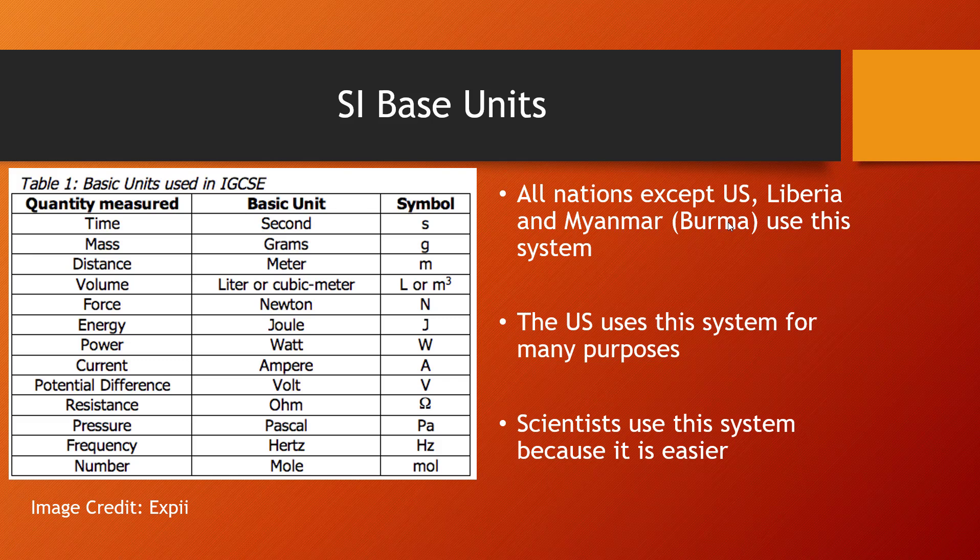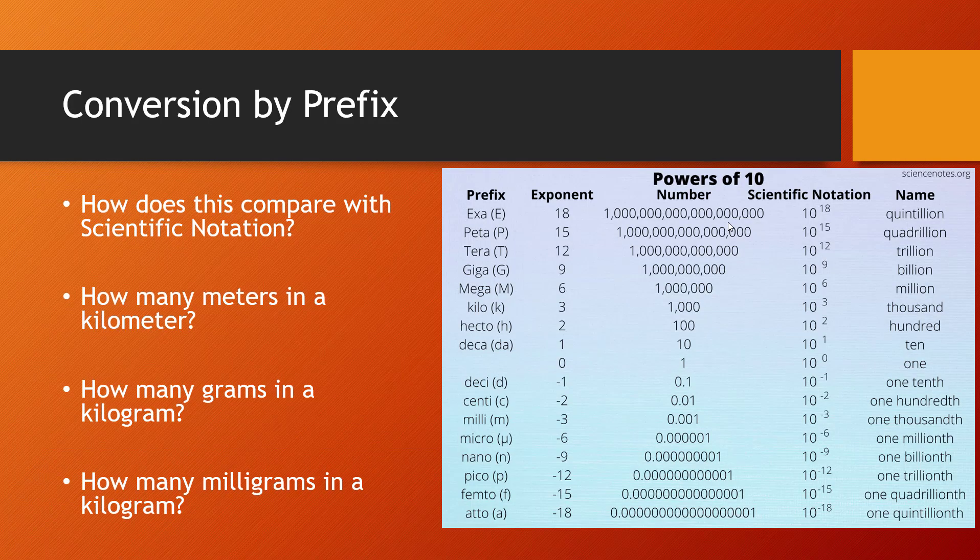We actually use this system pretty often for a lot of different purposes. For example, we measure things in seconds. And if you ever look at the side of your cereal box, you're going to see things measured in grams. You're on a 5k, you're measuring that in meters. So there are plenty of different times to use this. And scientists use it because, let's face it, it is easier to convert things between different sizes.